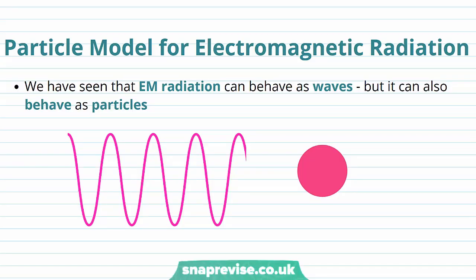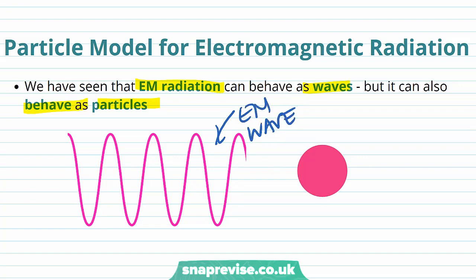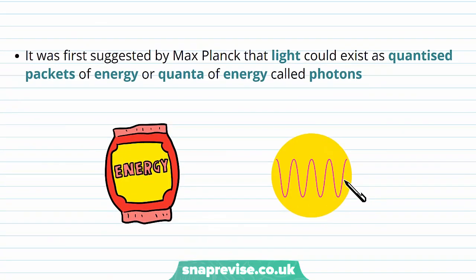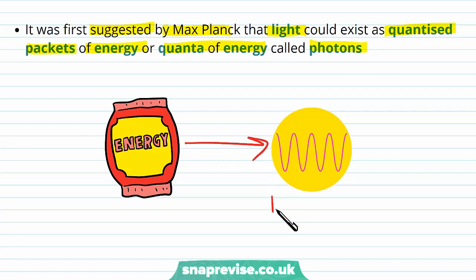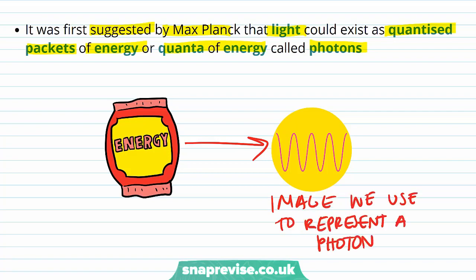We're going to start off by discussing the particle model for electromagnetic radiation. We have seen that electromagnetic radiation can behave as waves, but it can also behave as a particle. It was first suggested by Max Planck that light could exist as quantized packets of energy, or quanta of energy, called photons. We include a wave inside a circle to show the wave nature and particle nature of EM radiation.